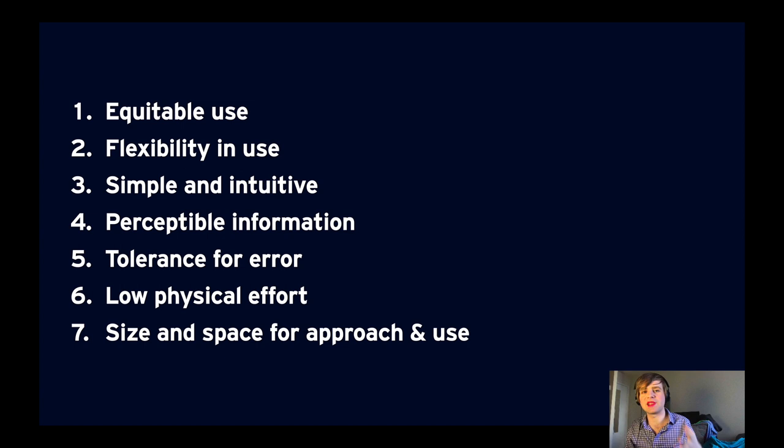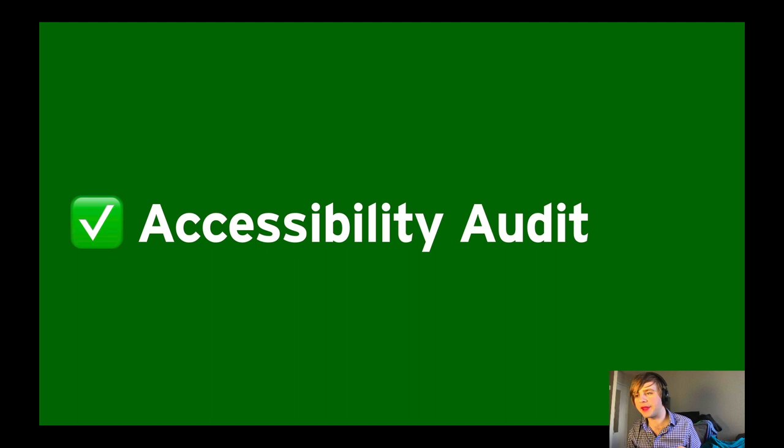So how do we do it? How do we get this right? We go back to those seven principles of universal design — equitable use, flexibility, simplicity — this is what we're striving for when we build apps. For existing apps, I always recommend starting with an accessibility audit to find out where things are broken or unimplemented and make a plan for fixing them. The easiest way to start is to open the Accessibility Inspector in Xcode — right-click, choose Open Developer Tool, Accessibility Inspector — or from the Xcode menu bar.